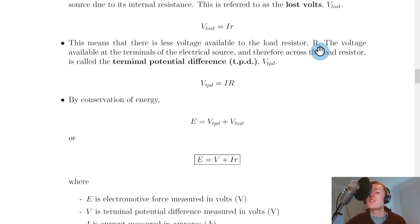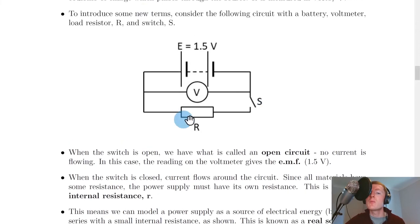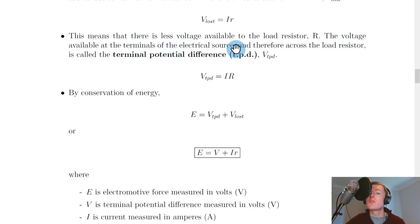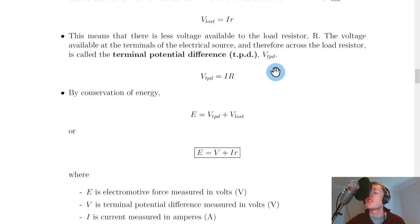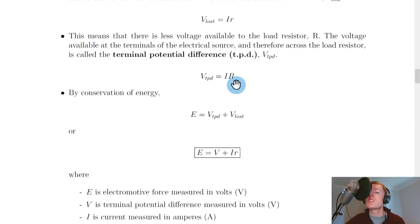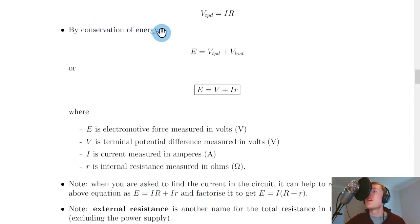This means there is less voltage available to the load resistor R, also known as the external resistance. The voltage available at the terminals of the source — and therefore across the load resistor — is called the terminal potential difference, or TPD, written as V_TPD. We can use V = IR to calculate the terminal potential difference, where R is the external resistor, not the internal one.